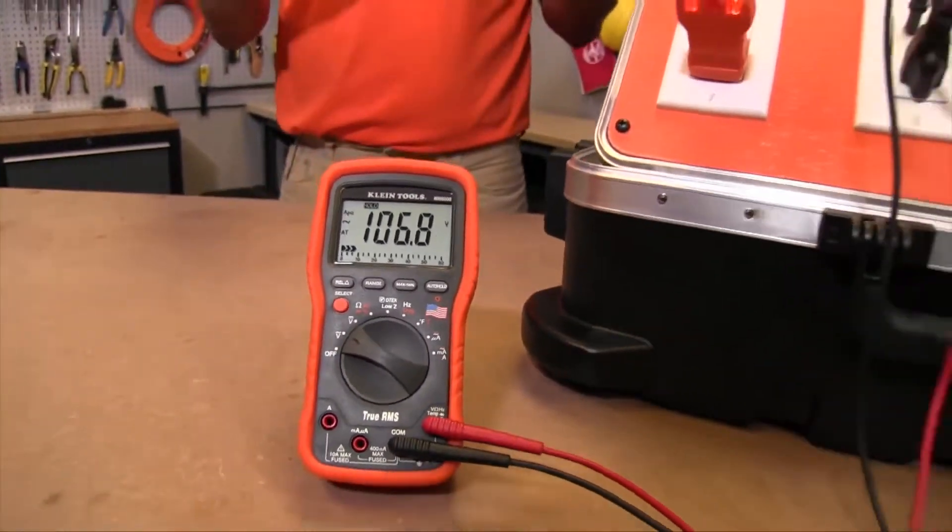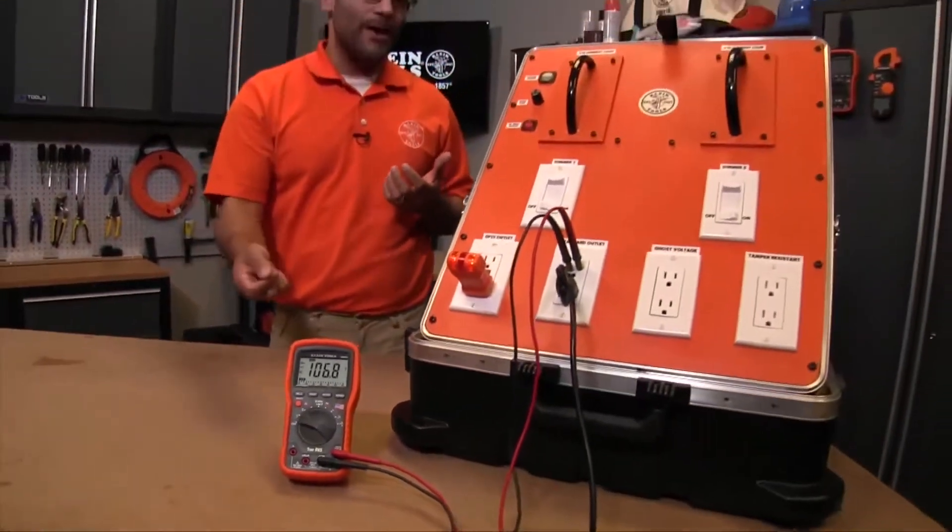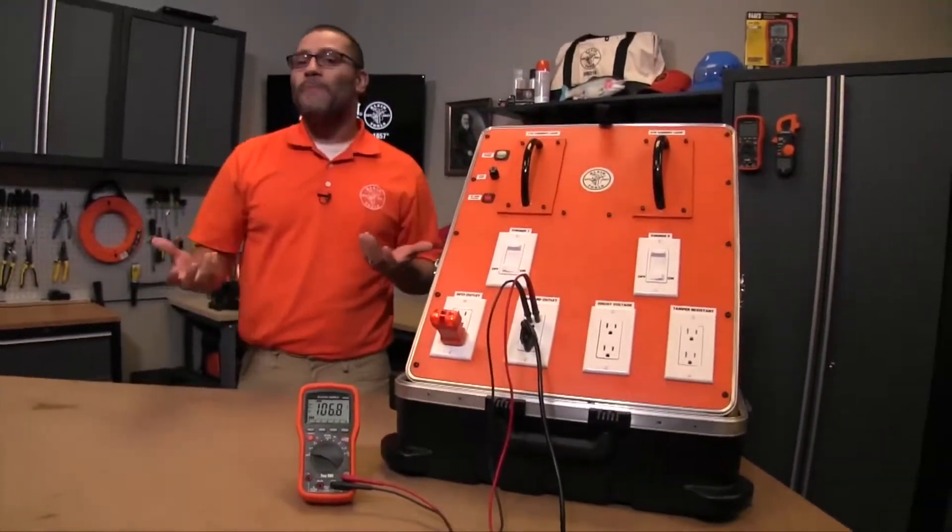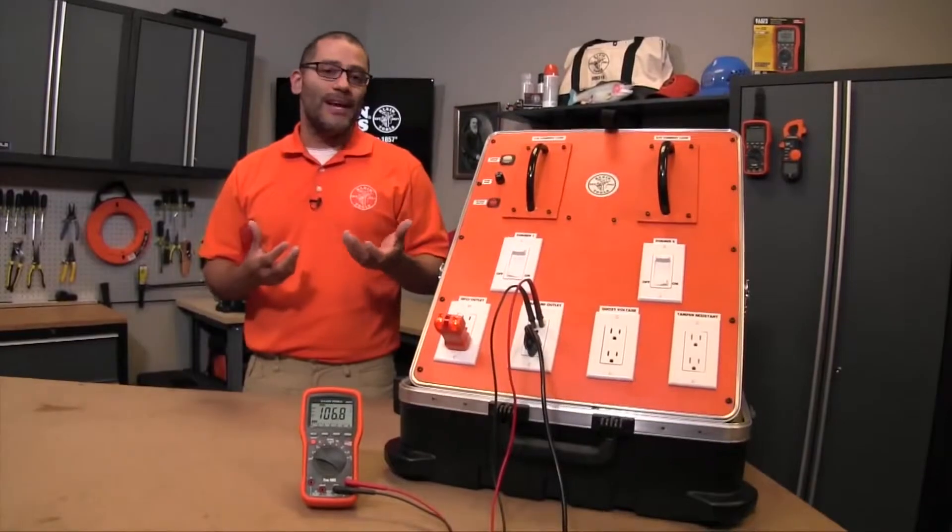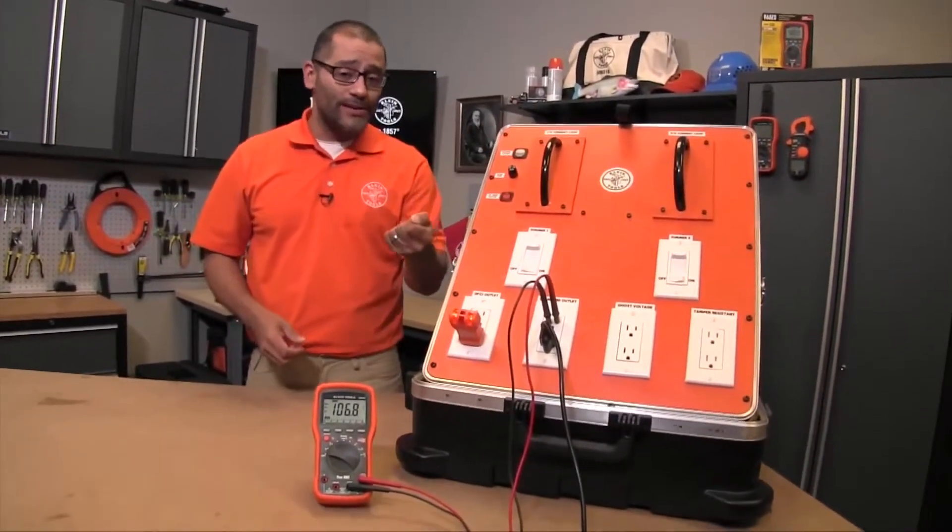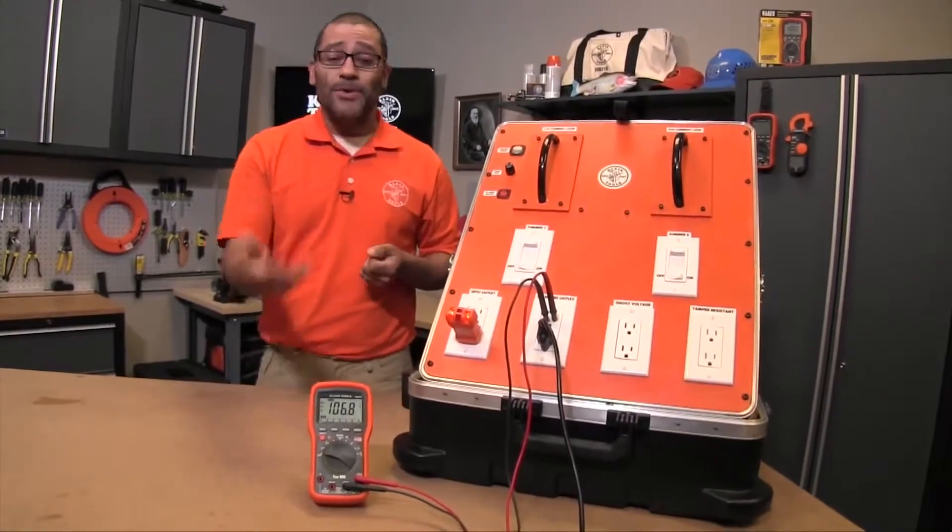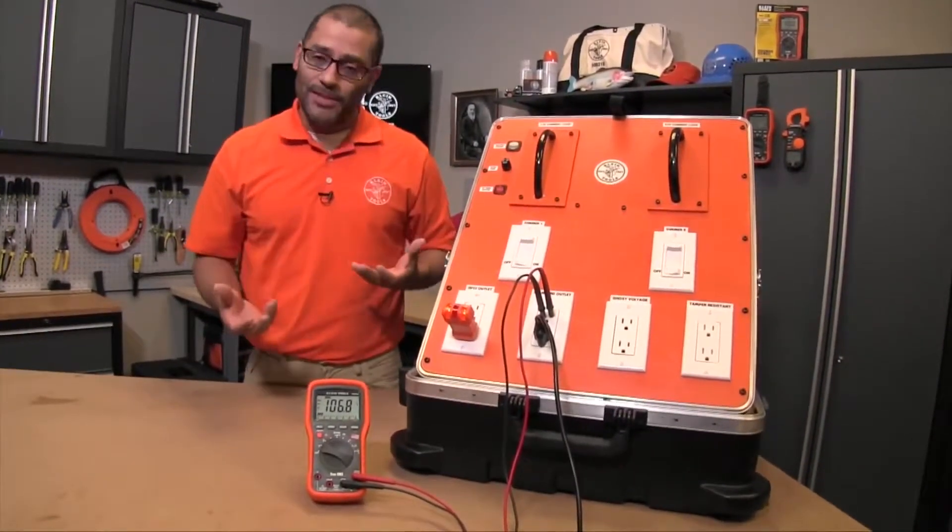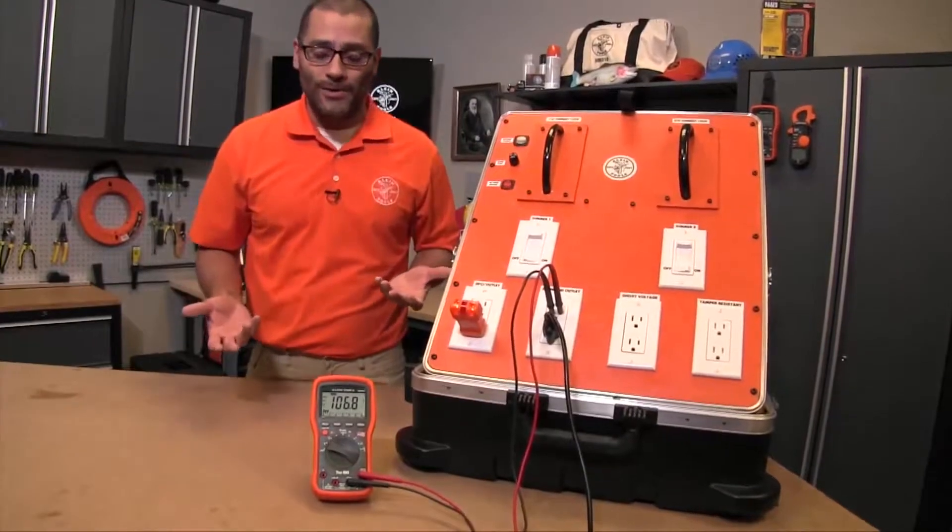Now that's great if you have the capability to press that button and hit the hold button, but what about if you're going to take a measurement in an area where you can't have both your hands full. You've got your hands with your leads in it, but you can't really hold the meter at all. So in that type of situation we would want to use auto hold.